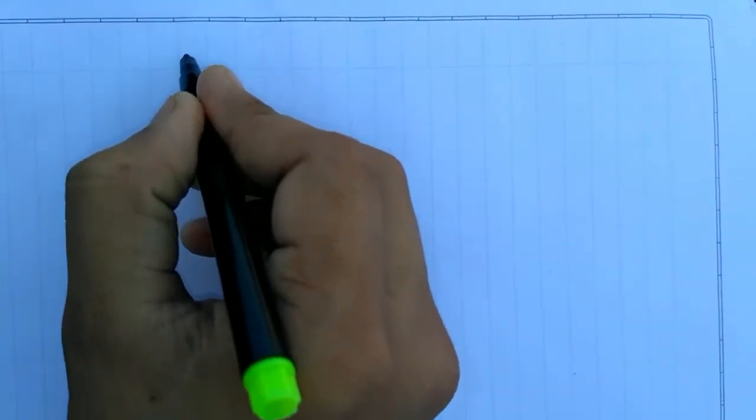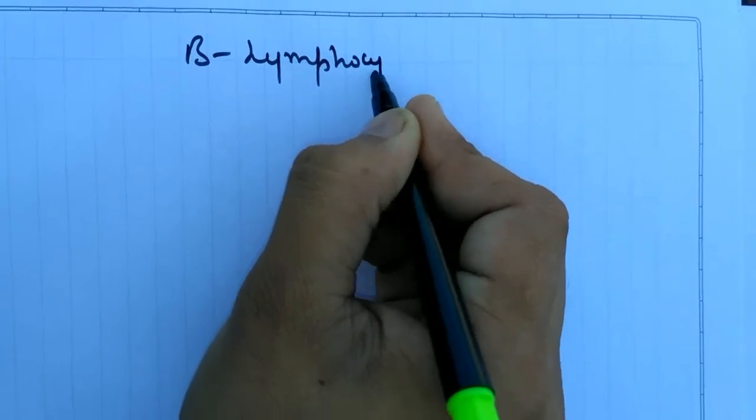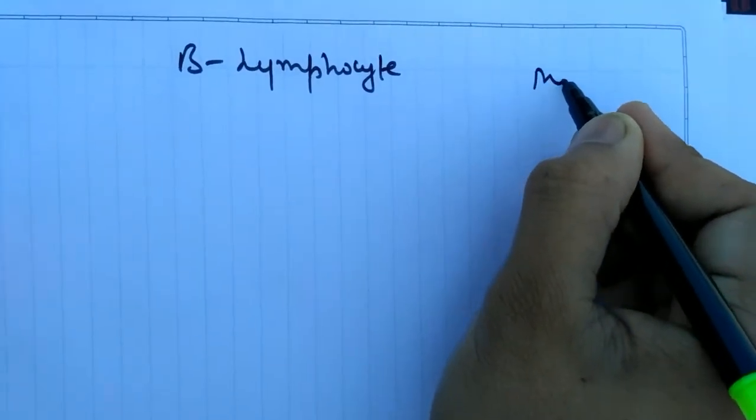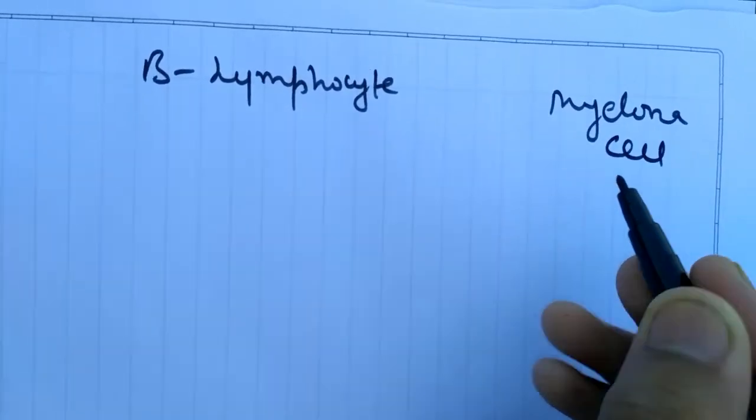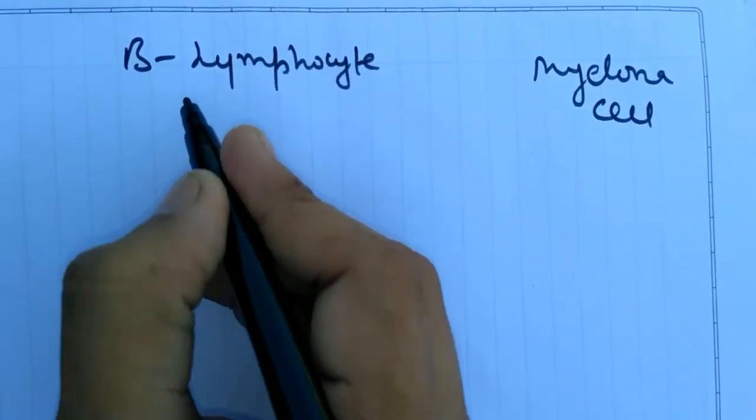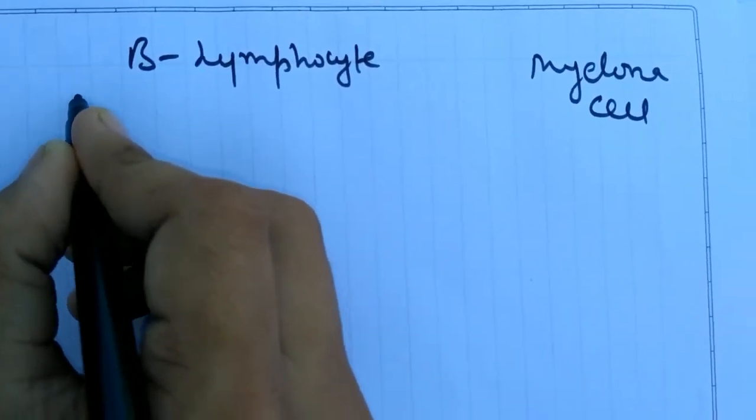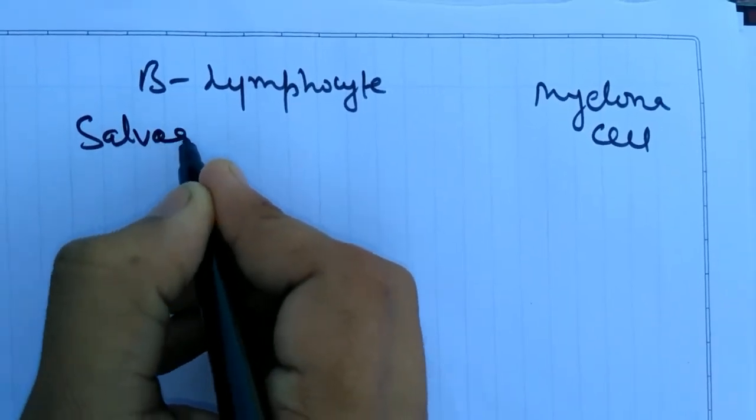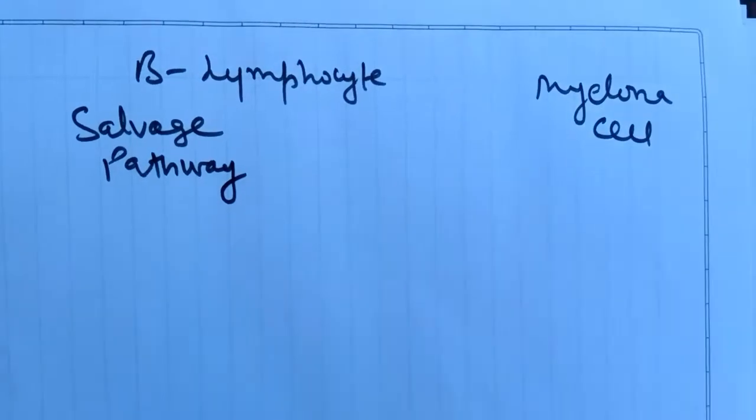Let's see B lymphocyte and myeloma cell. They have different properties in different mediums. Here in the salvage pathway, this pathway is the lab technique.